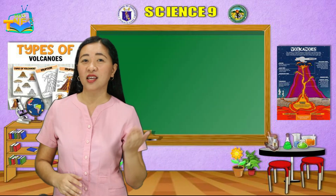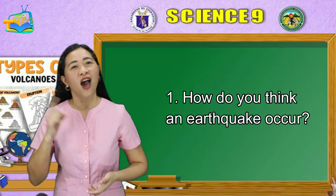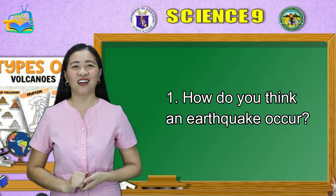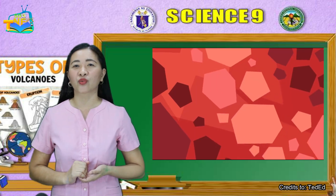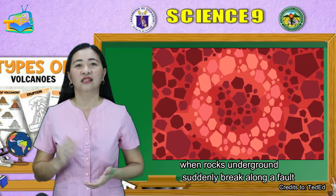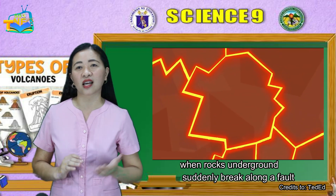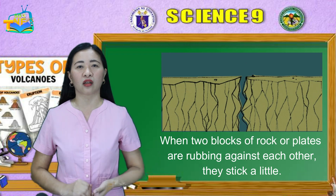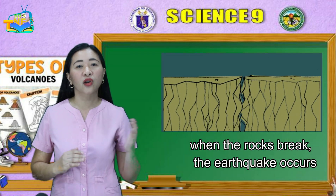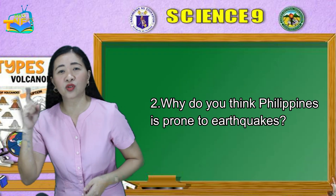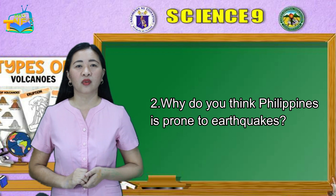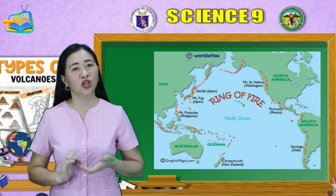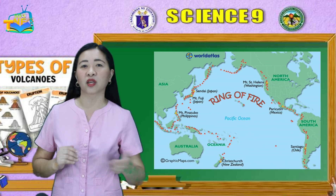First, let us see how much you remember about earthquakes. How do you think an earthquake occurs? Earthquakes are usually caused when rock underground suddenly breaks along a fault. This sudden release of energy causes the seismic waves that make the ground shake. When two blocks of rock or plates are rubbing against each other, they stick a little, and when the rocks break, the earthquake occurs. The Philippines lies along the Pacific Ring of Fire, which causes the country to have frequent seismic and volcanic activity.